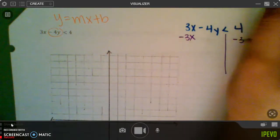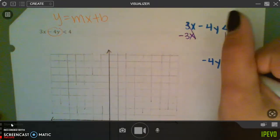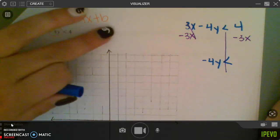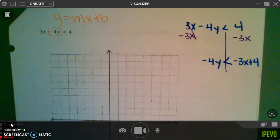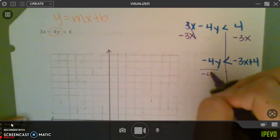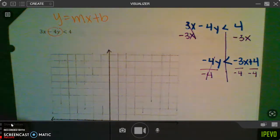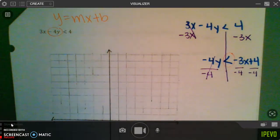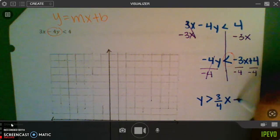Now I'm left with negative 4y is less than, it's mx plus b, so the x part is going to come first, negative 3x plus 4. From there, I'm almost where I need to be. I need the y completely by itself though, so divide by negative 4, divide by negative 4, and divide by negative 4. But remember, when you divide by a negative, or multiply by a negative, your sign flips. So the new equation we're looking at is y is not less than, it's greater than, I had to flip, 3 over 4x minus 1.